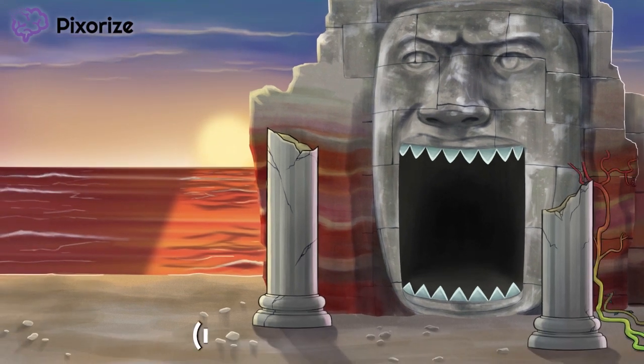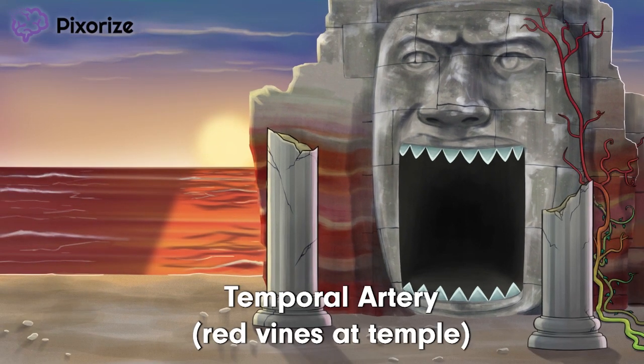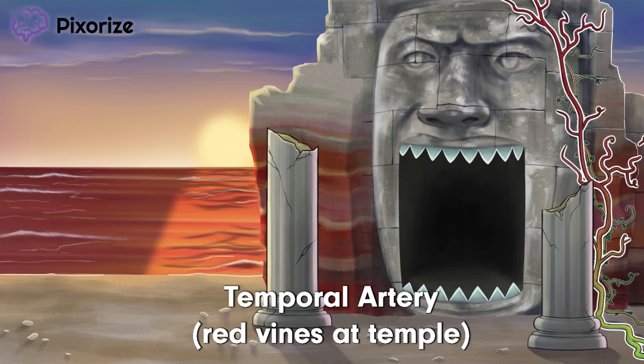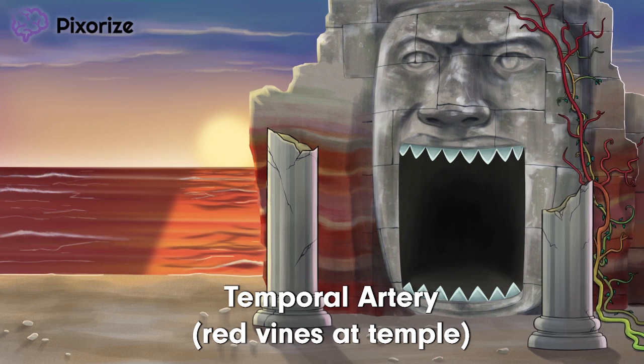Next, take a look at those vines growing on top of this giant head. These red vines make me think of arteries, and the location of these red vines makes me think of the temporal artery specifically. The temporal artery flows near the temples of the head. Giant cell arteritis classically involves the temporal arteries, which is why this disease is also called temporal arteritis.